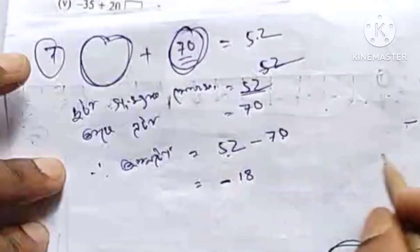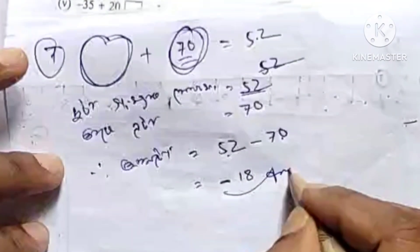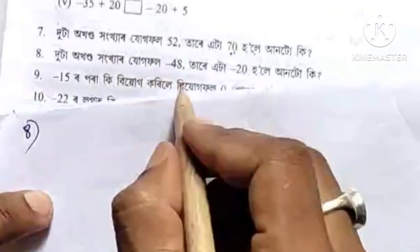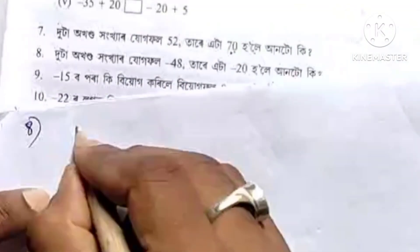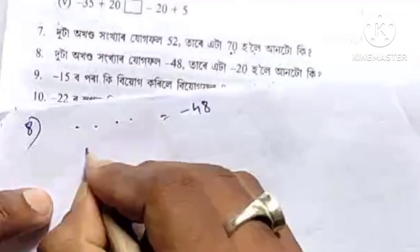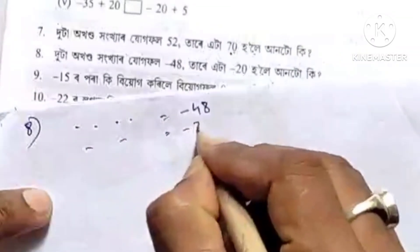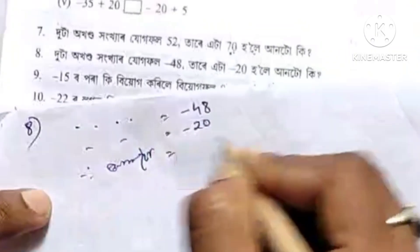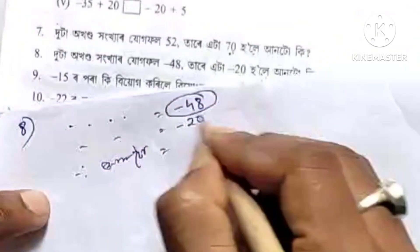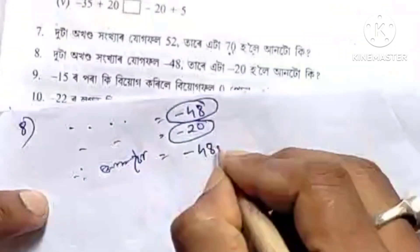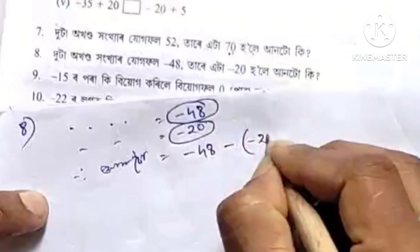As I say, the answer is number 8. Left is left, the right is 48. Eta minus 20 — here to get anto, anto gives minus 48, minus minus 20.